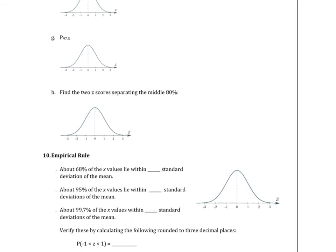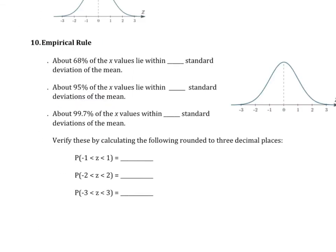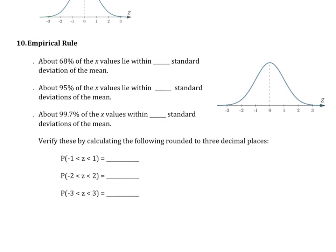The last thing we're going to talk about is empirical rule. This gives you a guideline on how the distribution is distributed. Let's look at the first statement: about 68 percent of x values lie within blank standard deviation of the mean.